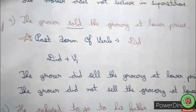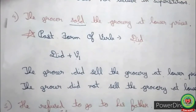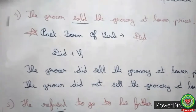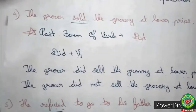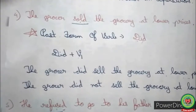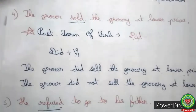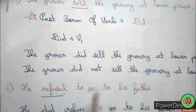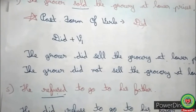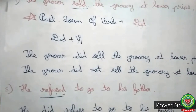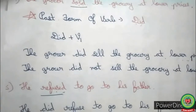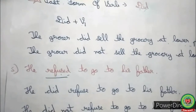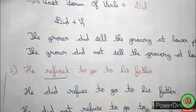Look at the next example: 'He refused to go to his father.' 'Refused' is the past form of the verb. So we add 'did' as a helping verb, and the sentence becomes: 'He did refuse to go to his father' — that is, 'refused' has been changed to 'did refuse,' which is did + present form of refuse. Now adding 'not,' the sentence becomes: 'He did not refuse to go to his father.'